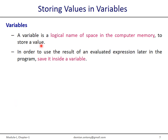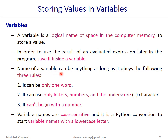Variables. A variable is a logical name of memory space in the computer to store a value. In order to use the result of an evaluated expression later in the program, we need to save the evaluated value inside a variable. The name of a variable can be anything as long as it obeys the following three rules: first, it can be only one word; second, it can use only letters, numbers, and the underscore character.